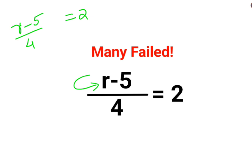Now in order to find the value of R, we need to multiply both sides by 4. In this case, this 4 and 4 gets cancelled and we get R-5 equals to 8.